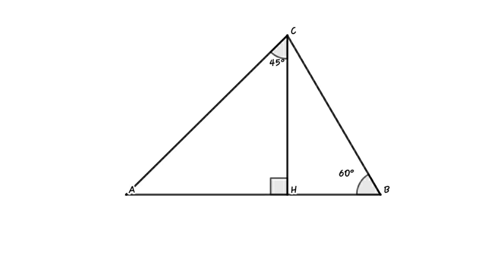Connect A and C. Angle ACH measures 45 degrees. Draw the angle bisector of angle B. The angle bisector intersects CH at I. Connect A and I. Then find the value of angle BAI.